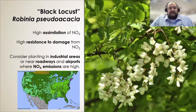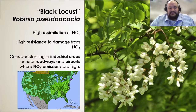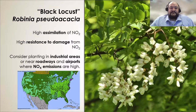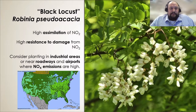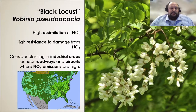A study looked at 70 different species to find which had high assimilation of nitrogen dioxide into their plant tissue as well as high resistance to damage from nitrogen dioxide. They found four species with both qualities — high assimilation of NO2 and high resistance to tissue damage from NO2. Of those four species, one of them, the black locust, is native to North America. Black locust would be great to consider planting in industrial areas, near roadways, airports, or any other areas where nitrogen dioxide emissions are high.